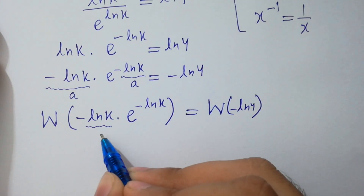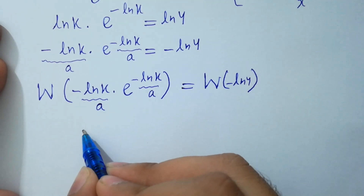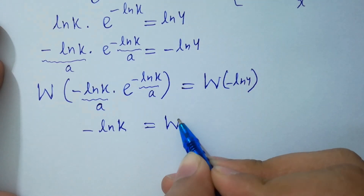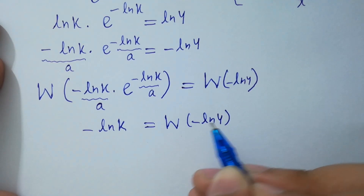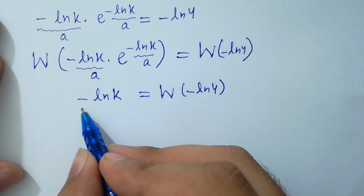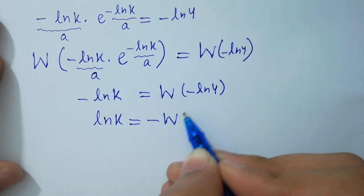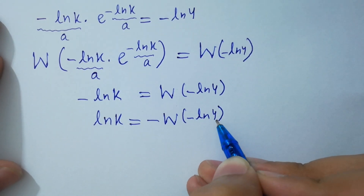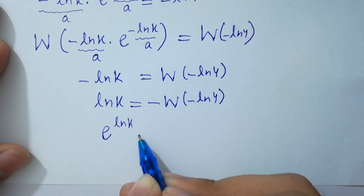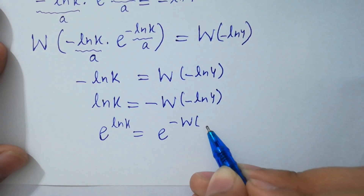Since W of A times e to the power A equals A, so A here — which is minus ln k — equals W of minus ln 4. To get rid of the minus, multiply by minus on both sides: ln k equals minus W of minus ln 4. Now raise e to the power of both sides: e to the power ln k equals e to the power of minus W of minus ln 4.